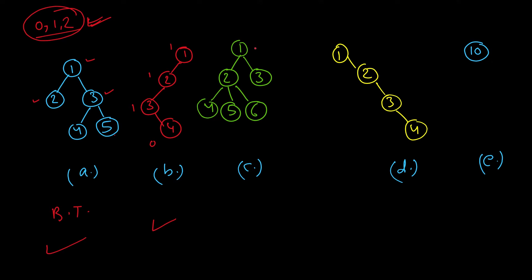Here one satisfies it, three satisfies it, but two, you see two has three children. So it's violated at two and this is not a binary tree.